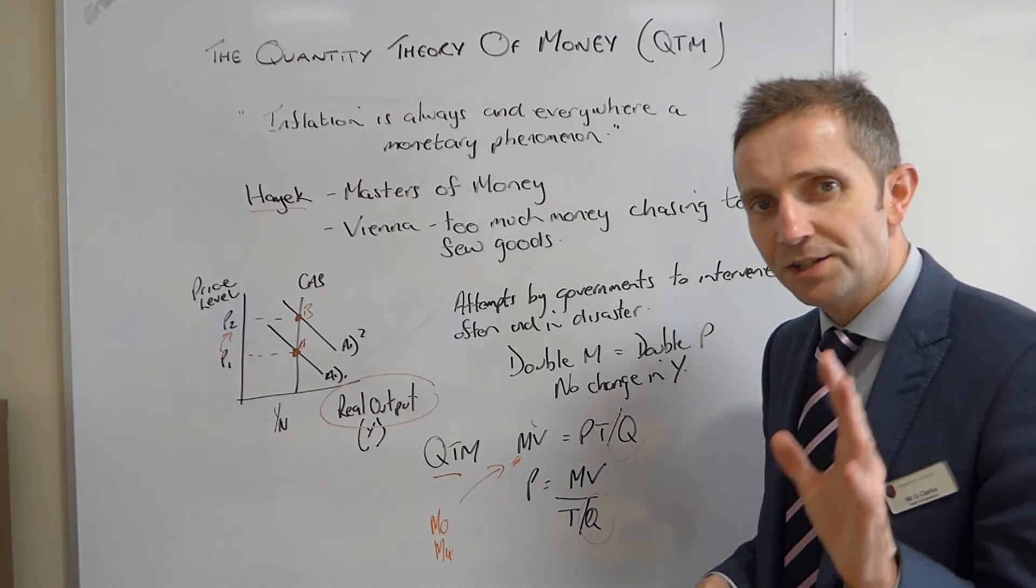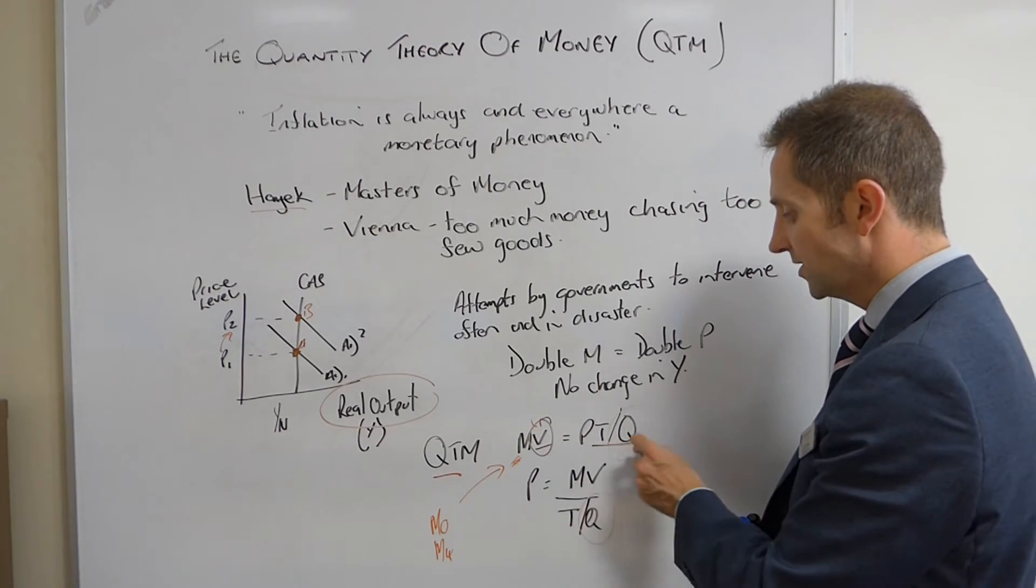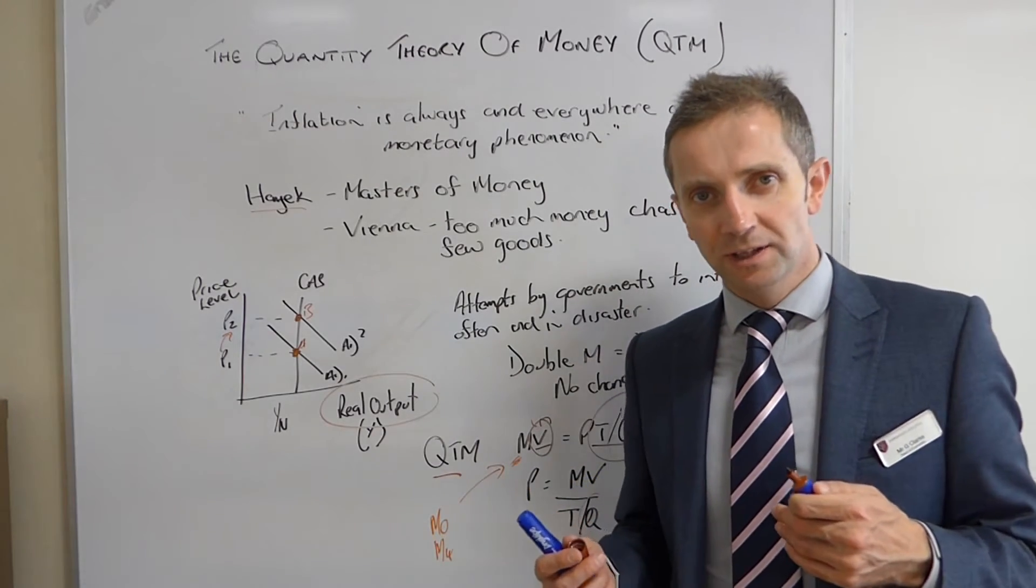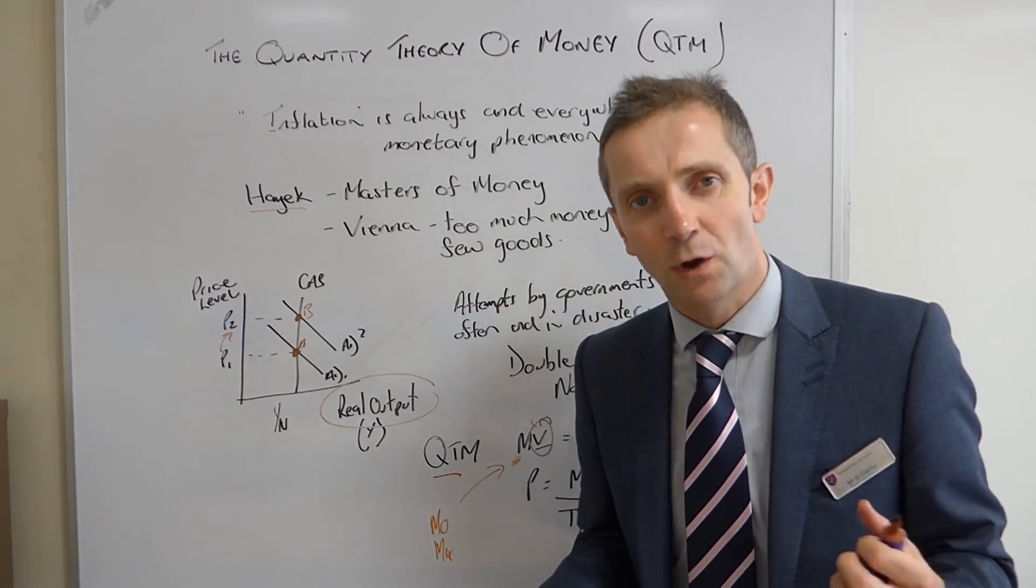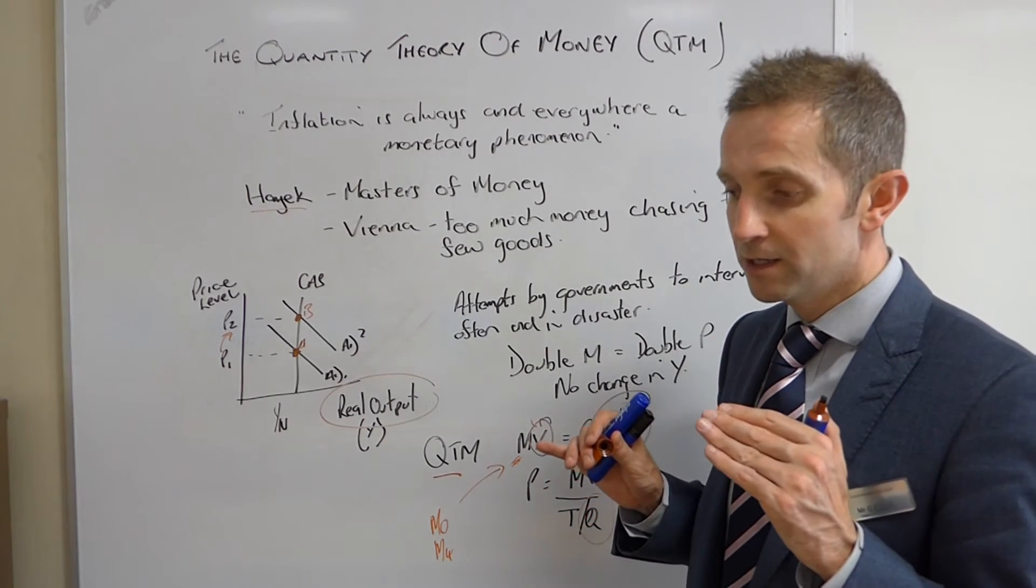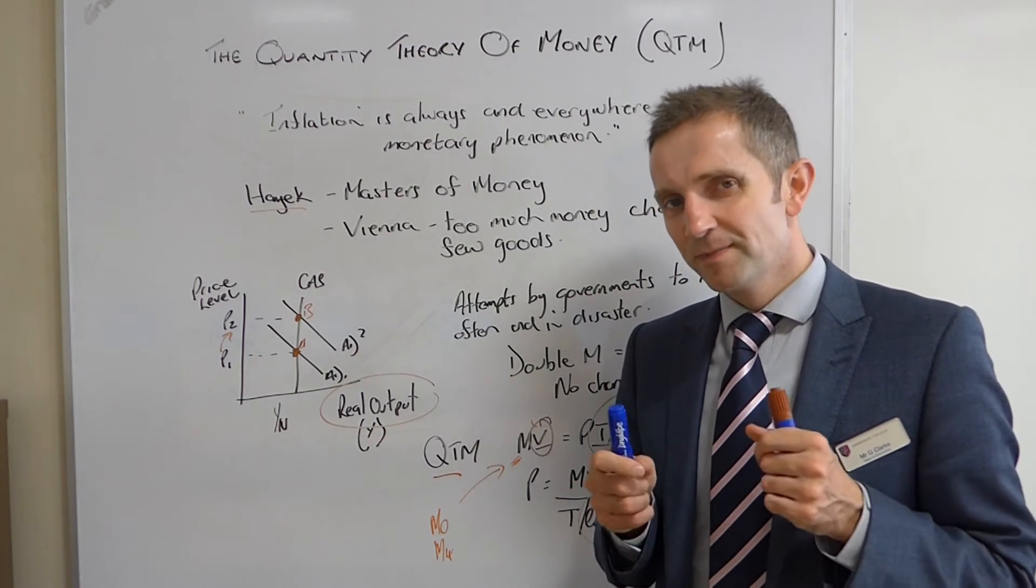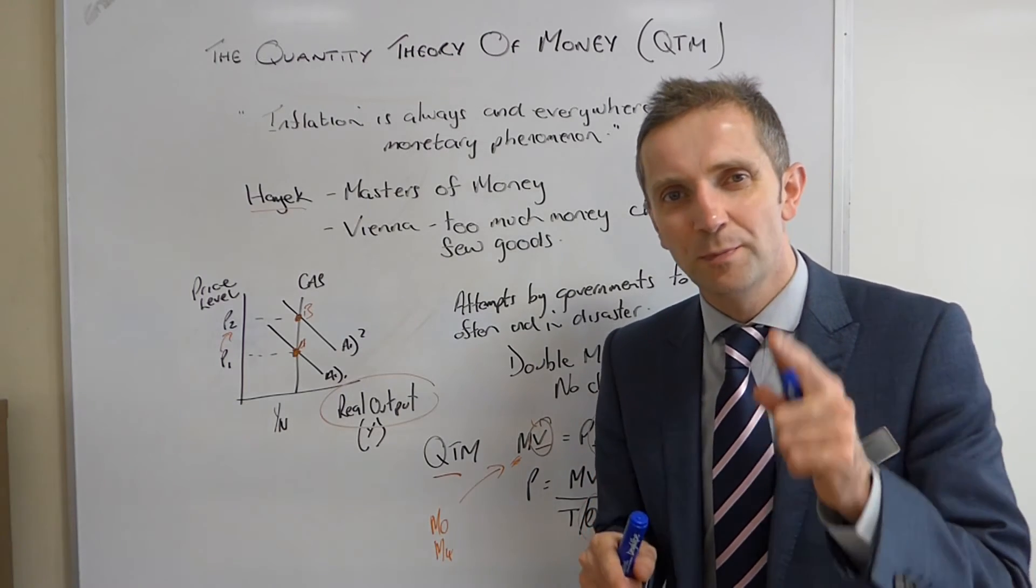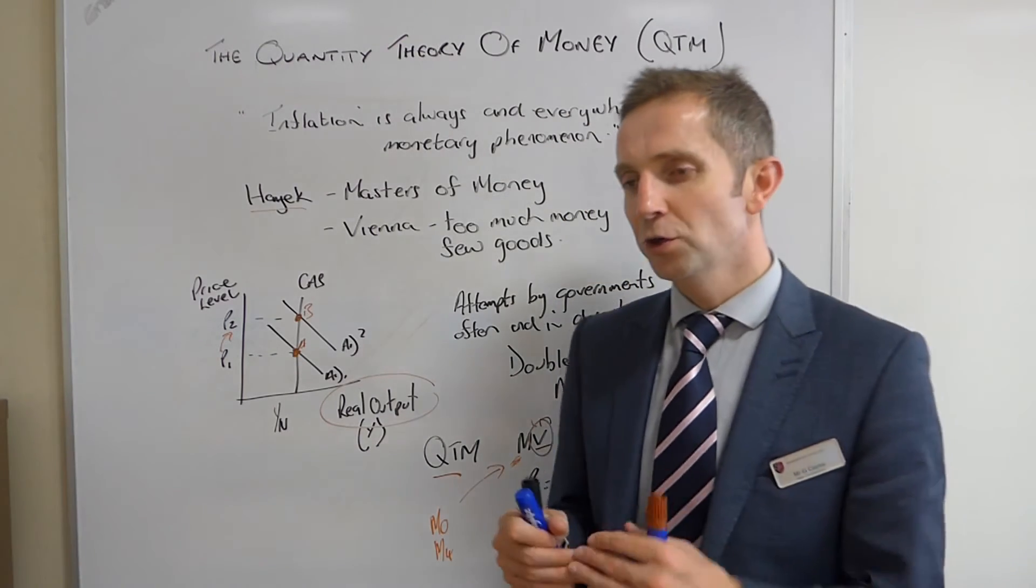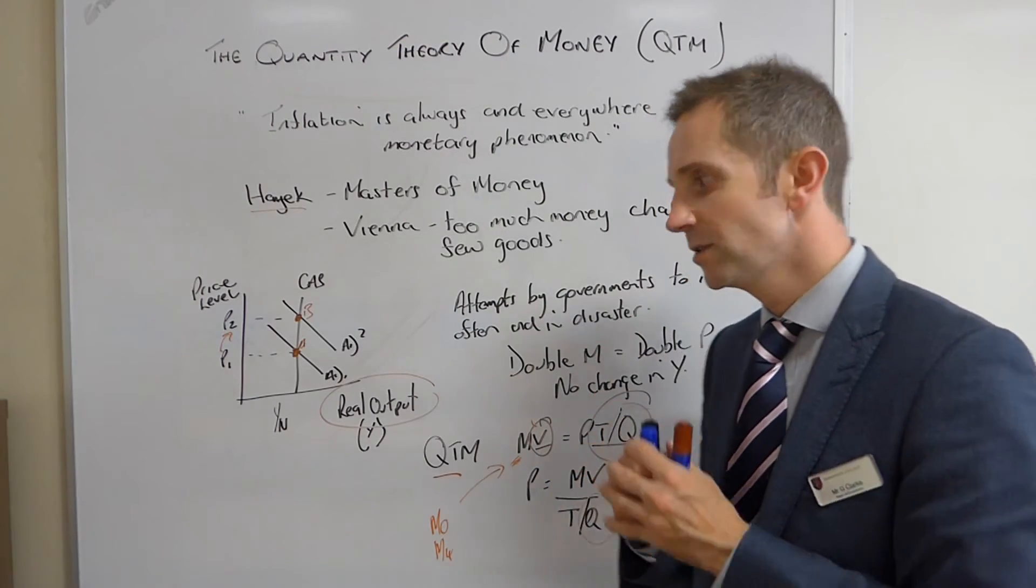However, classical economics and Friedman argues that V, velocity of circulation, and T stroke Q, whichever book you're looking at, argues that those two things are constant. And why does he argue that those two things are constant? Well, based on empirical studies of historic data, looking at historic data in booms and recessions, Friedman thought and discovered that actually V, although it might alter during a boom and a recession, doesn't alter by enough, doesn't alter significantly enough to affect the price level. And the same goes for T or Q. Yes, it may change, but not by a significant enough amount to alter the price level.